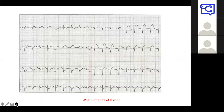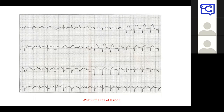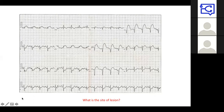Before we talk about ACS in detail, if people want to put in the chat what they think the lesion is from the ECG — we can see changes in V2, V3, and V4, suggesting ST elevation in anterior leads. There's also some lateral changes in V5, possibly not so much V6. So we could say this is anterolateral, which could be the LAD — the left anterior descending artery. We'll talk about this in more detail as we go through our notes.